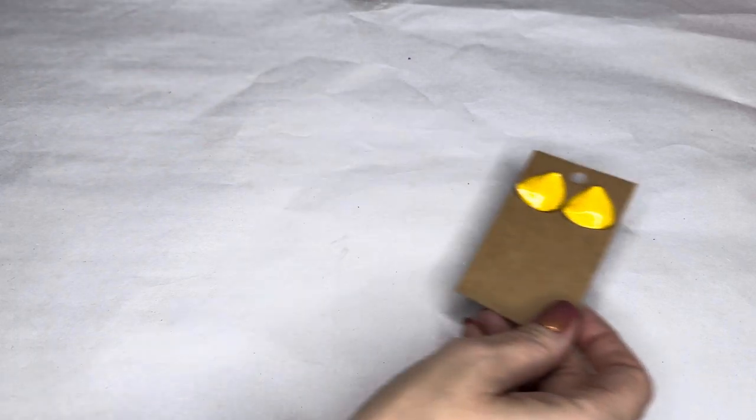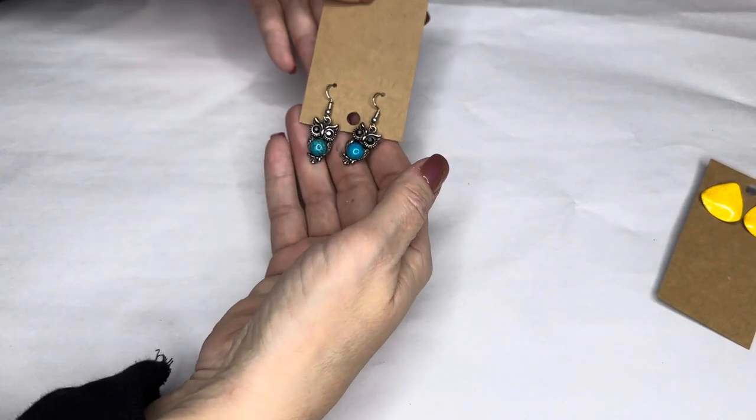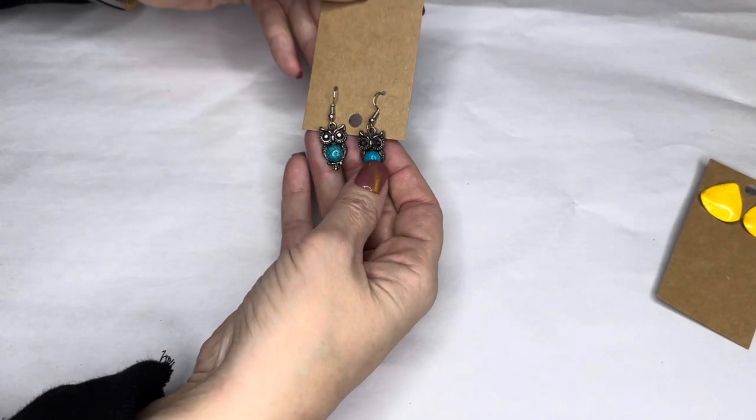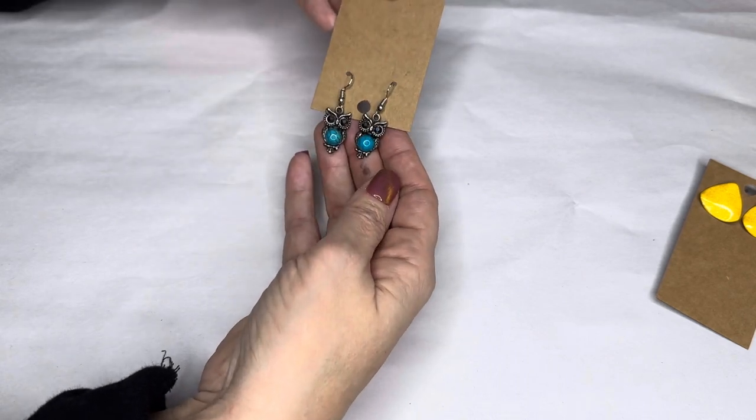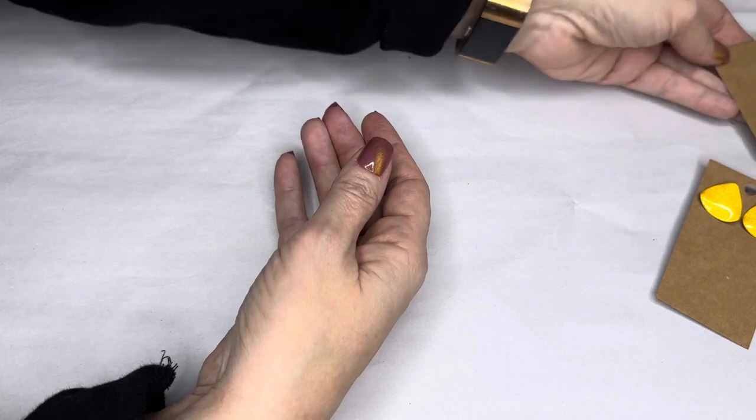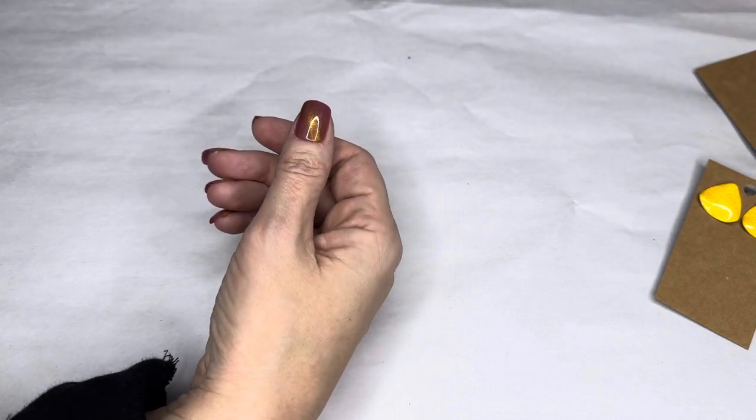We've got some owl earrings with turquoise stone centers. Most of my jewelry's costume. It's buy one get one free. Things are listed between ten and twenty-five dollars.